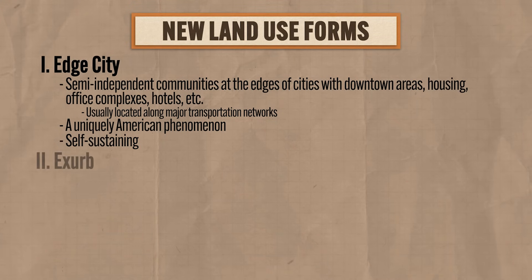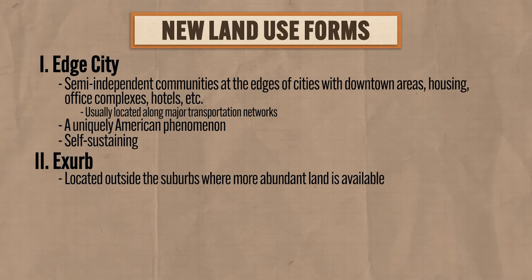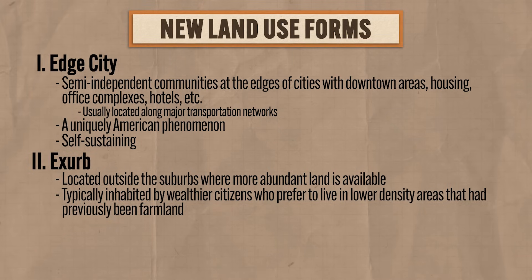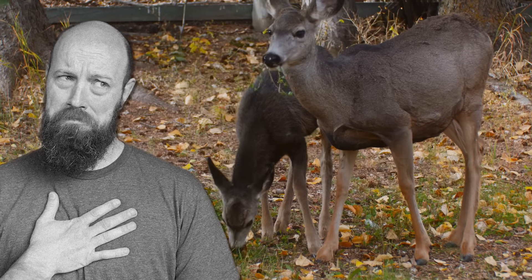The second land use form is the exurb, which is located outside the suburbs where more abundant land is available and typically inhabited by wealthier citizens who prefer to live in lower density areas that have previously been farmland. Think about it — you get to look out your window and see trees, listen to birds, and name all the deer that frequent your backyard. However, the exurb is still linked to the city via roads, and if people live there, they're required to have cars in order to get day-to-day necessities even if they work from home. Today, more and more people have stopped commuting to the city and are telecommuting for work from their exurban home.